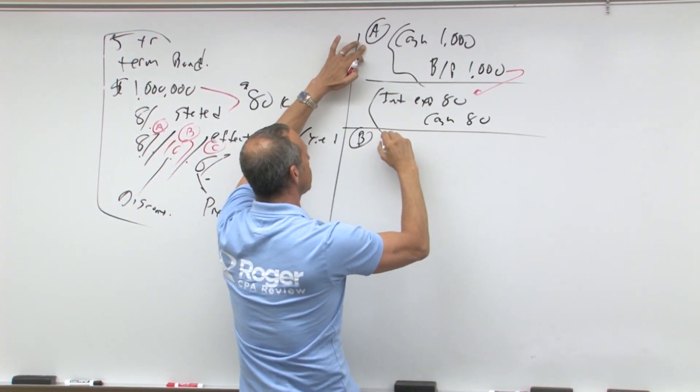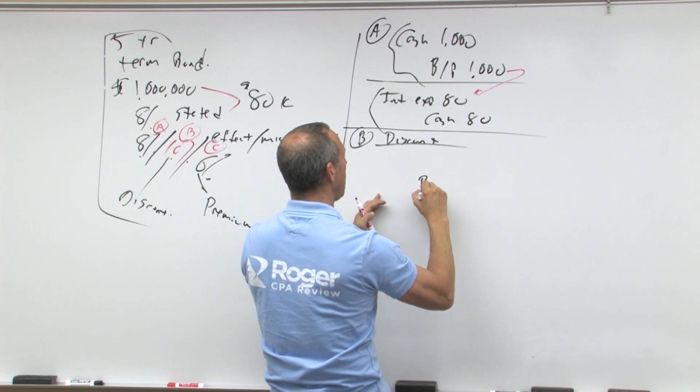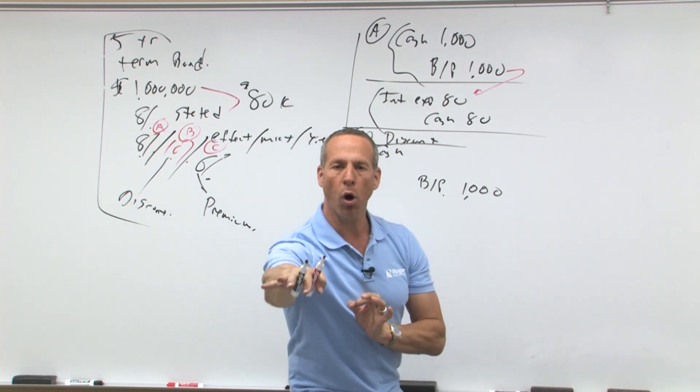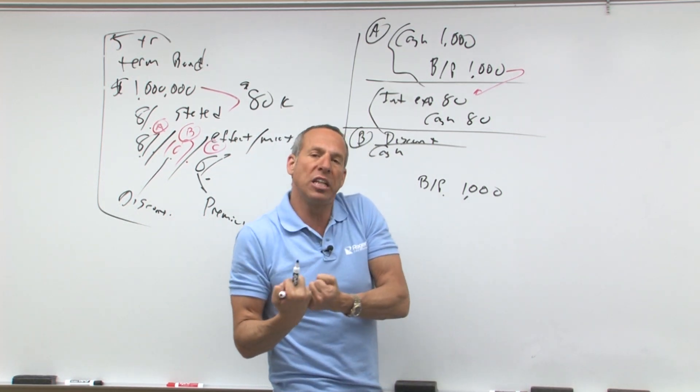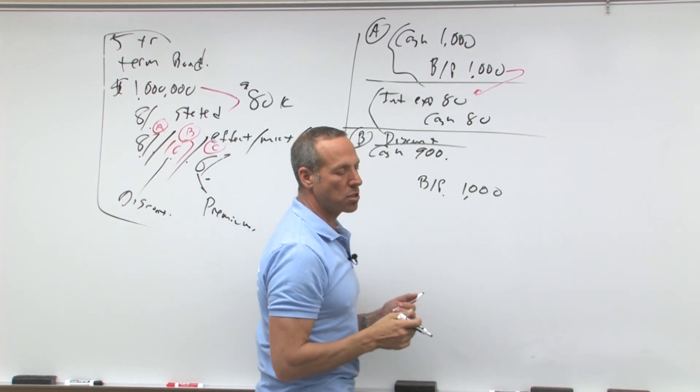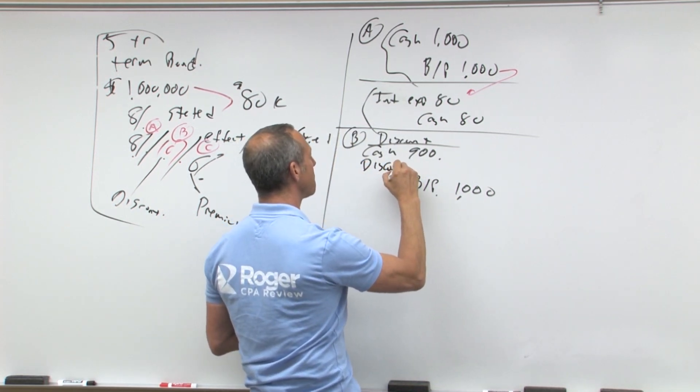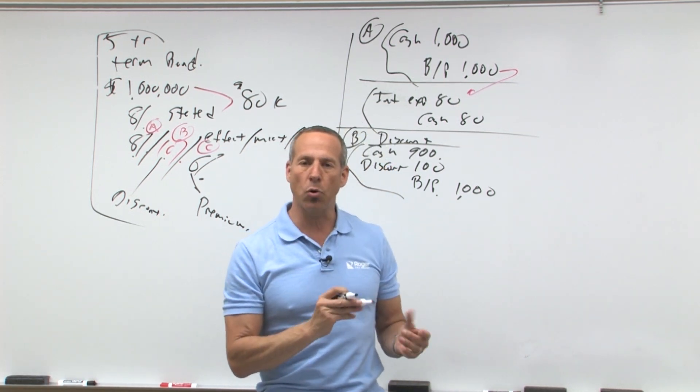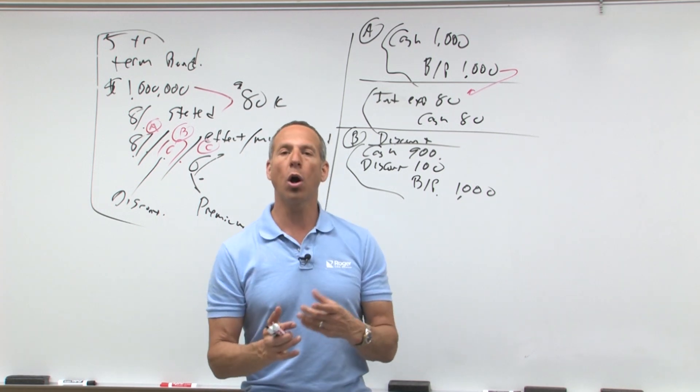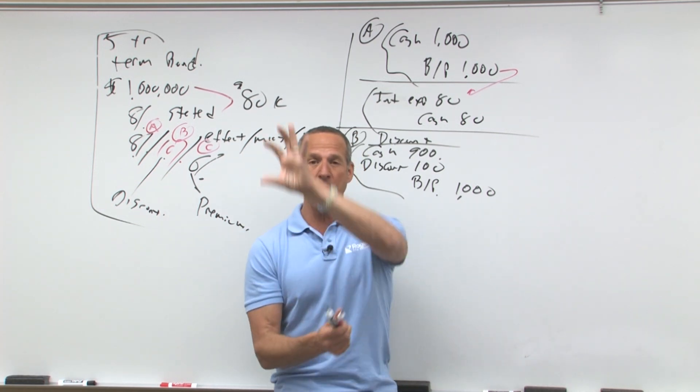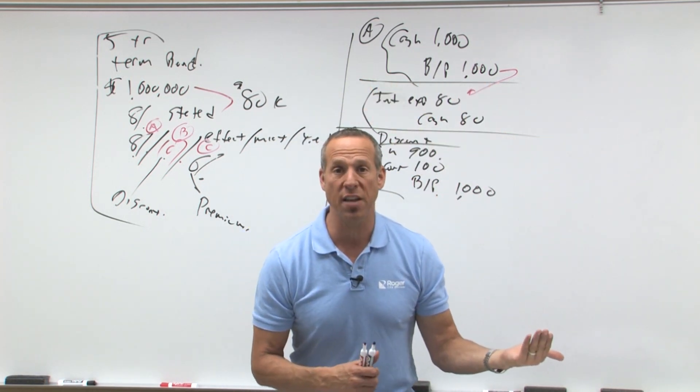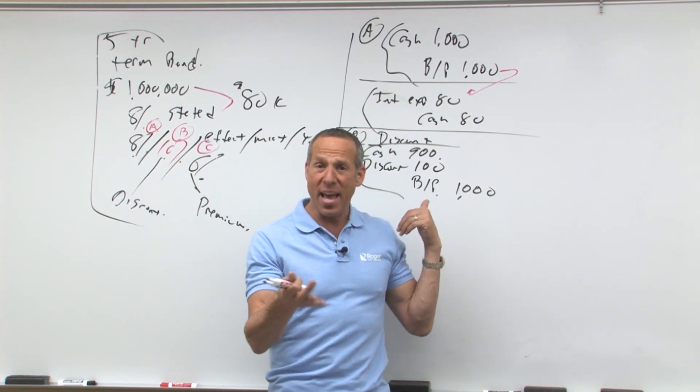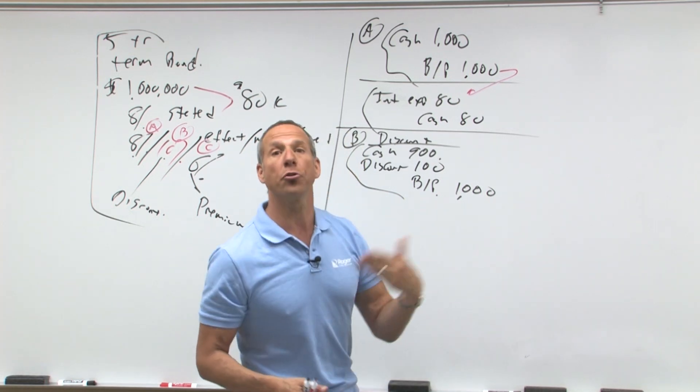The second situation, B, this would be a discount. In this case, they're going to credit bonds payable always for face, so a million bucks. Now how much cash are they getting? Because you want to earn more than 8%, I'm going to charge you less than 8%, so I'm only going to get $900,000 up front. The difference is going to be the discount, and let's say in this case it's $100,000. Now to keep it simple, I'm going to amortize the discount one of two ways: straight-line (not GAAP) or effective interest method (GAAP), and that's going to use the same effective interest table that you were introduced to in notes receivable in an earlier section.